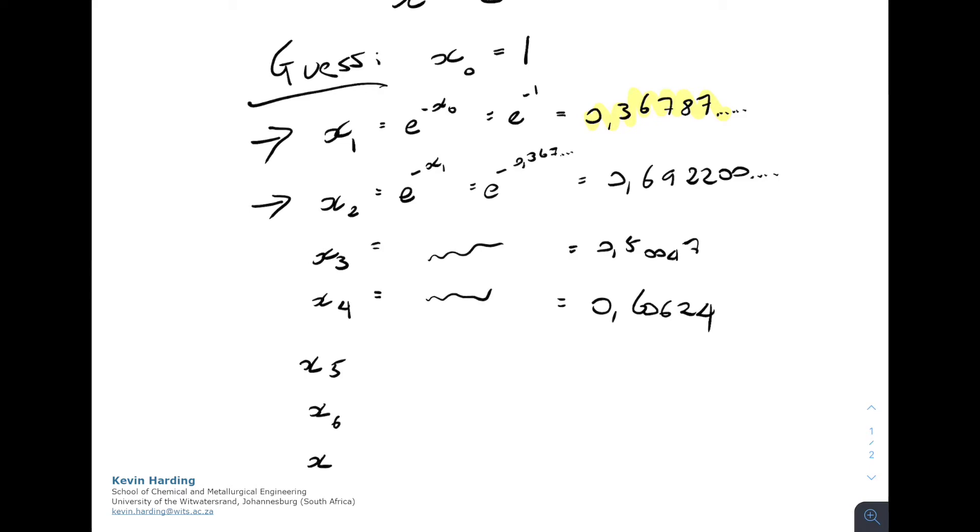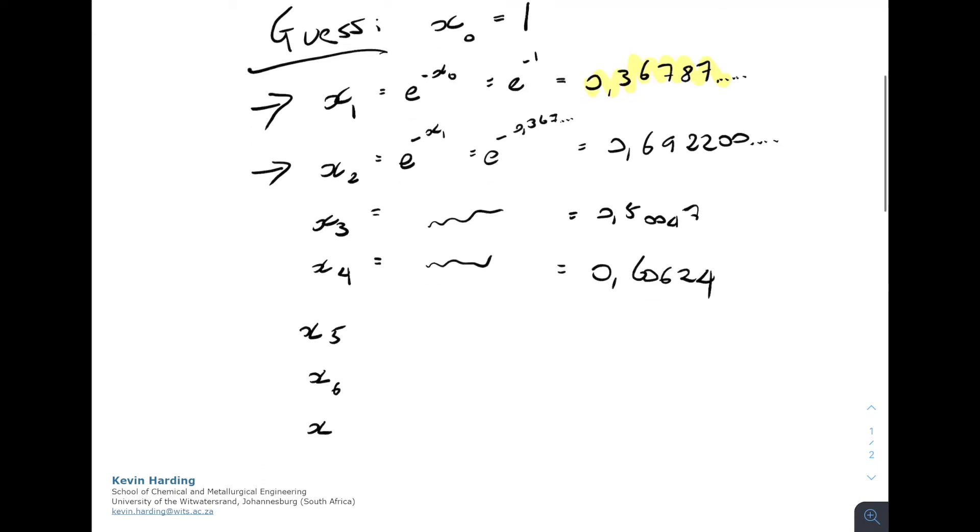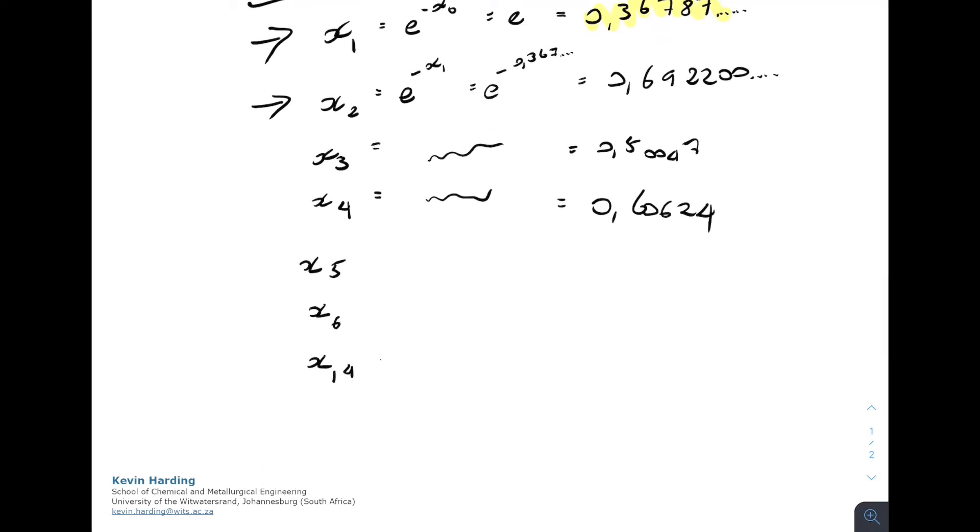And at some point, I get to a value where x, and I'm going to say 19 here. So x19 equals e to the minus x18. And I've calculated e to the minus x18 is e to the minus 0.567 with decimal places. And if I calculate that value, the answer I get is going to be 0.567 in decimal places.